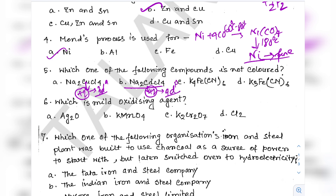Question 12: How many ions are produced from Co(NH3)6Cl3 in solution? The counter ion Cl3 produces three Cl⁻ ions and the cation [Co(NH3)6]³⁺ is one ion — so one cation and three anions are formed. Total four ions will be generated. Option B is the correct answer.